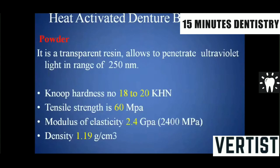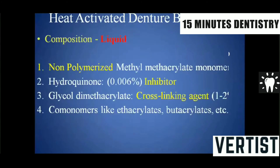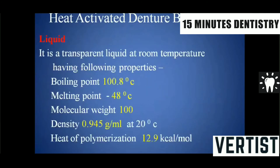The powder is a transparent resin unless color pigments are added, and it allows penetration of ultraviolet light in the range of 250 nanometers. The Vickers hardness number is around 18 to 20 KHN. The liquid is a non-polymerized methyl methacrylate monomer, with hydroquinone at 0.06% as an inhibitor, glycol dimethacrylate as a cross-linking agent, and co-monomers like ethyl acrylate and butyl acrylate.